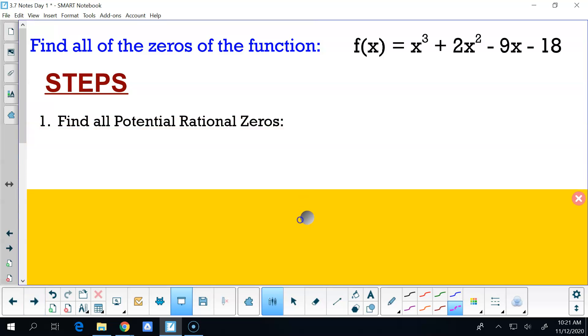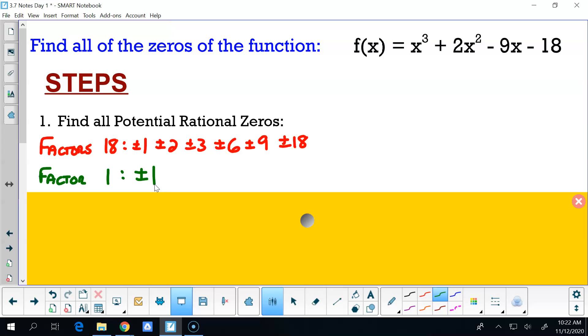So step number one is we're going to find all the potential zeros that we have. So that's what we were just doing. So we're going to find the factors of 18. So that's one, two, three, six, nine, and 18. Factors of one, that's just one. So my list is just my red list. Now that just happened to work out in this case. If we had a coefficient, that wouldn't necessarily be the case.